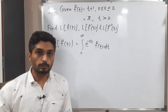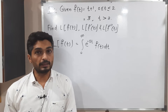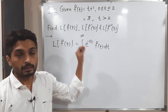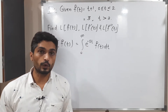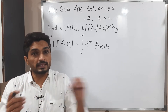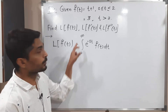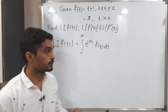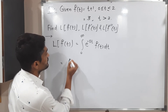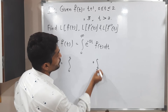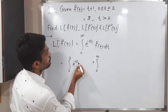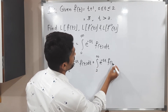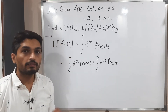Such types of problems we have already solved at the beginning when we discussed the definition of Laplace transform. After that, we have to put the value of f of t, but f of t has two different definitions or two different domains, so I will split this integration in two parts. We have 0 to infinity, so I will write 0 to 2 and then 2 to infinity.